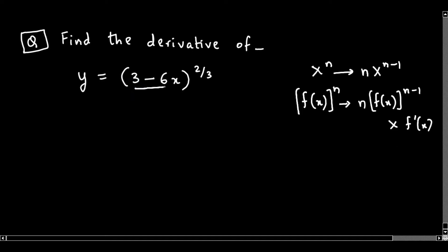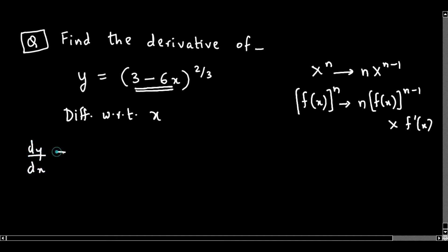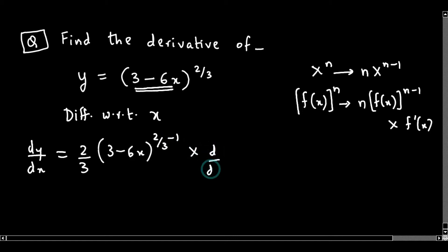So this is f(x) here. Differentiating with respect to x, we have dy/dx equals n times f(x) raised to n minus 1 into the derivative of f(x) — that is, the derivative of 3 minus 6x.